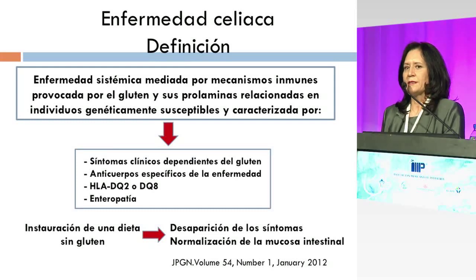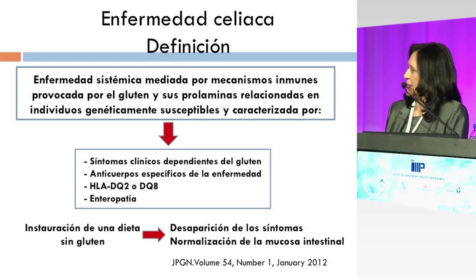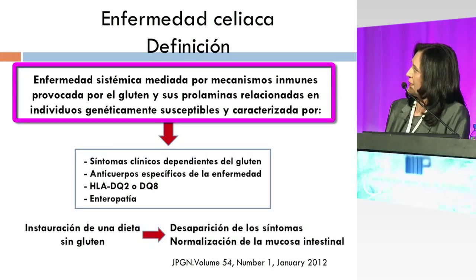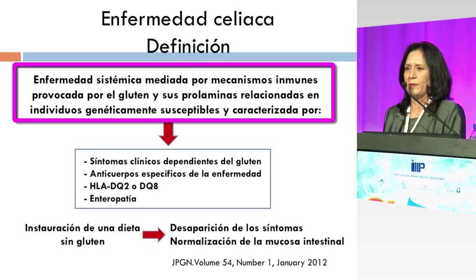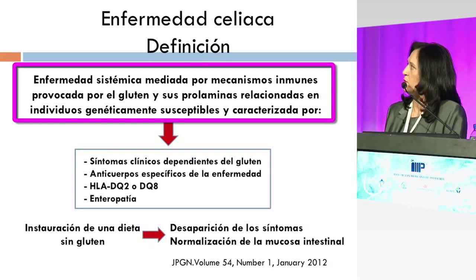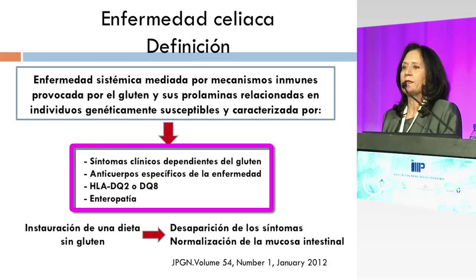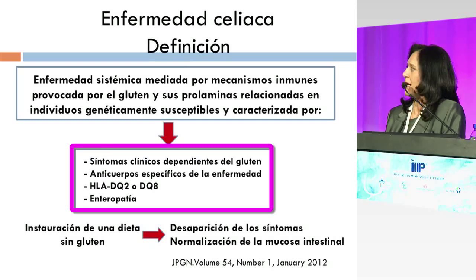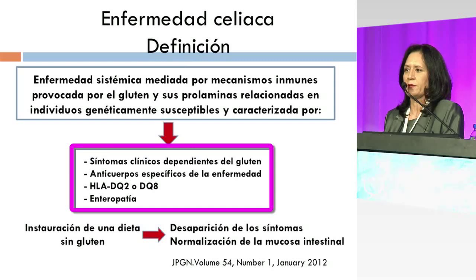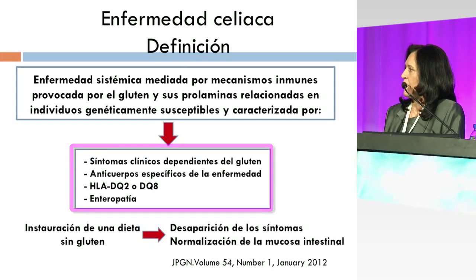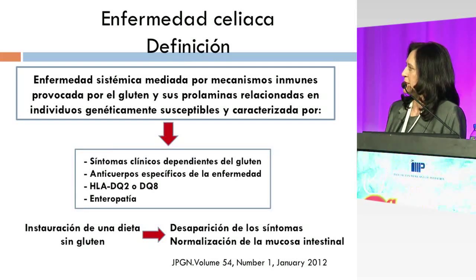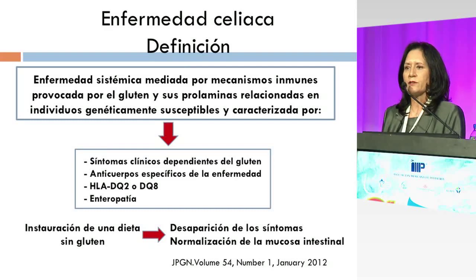Actualmente se ha modificado la idea anterior de que la enfermedad celíaca era una enteropatía solamente. En las guías de la ESPGHAN, se definió a la enfermedad celíaca como una enfermedad sistémica mediada por mecanismos inmunes, provocada siempre por el gluten y sus prolaminas relacionadas en sujetos predispuestos genéticamente. Se va a caracterizar por síntomas y signos dependientes del gluten, anticuerpos específicos, haplotipos HLA DQ2 y DQ8 encontrados en más del 98% de estos pacientes, y la enteropatía. Cuando se instaura una dieta libre de gluten, estos pacientes tienen desaparición de los síntomas y una recuperación de la enteropatía.